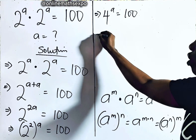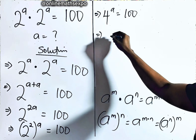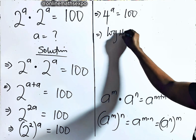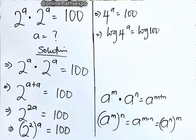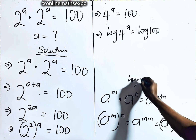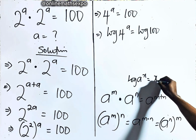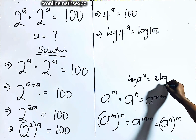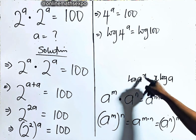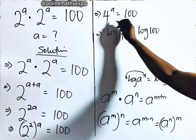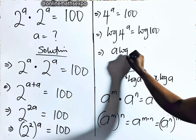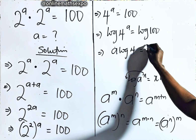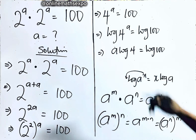At this point, you can take the log of both sides. So you have log of 4 to the power of a is equal to log of 100. Now remember: for every log of a to the power of x, it is x log a — the power multiplies the log. So we are going to have a log 4 is equal to log of 100.